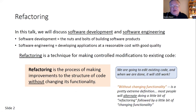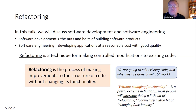Part of the software process is making changes to existing code, and refactoring is a tool that actually helps us do this well. Refactoring is a technique to make changes safely. As you can see in the box here, refactoring is the process of making improvements to the structure of code without changing its functionality. Your focus is on making changes that improve the structure, but you don't want to change the functionality.